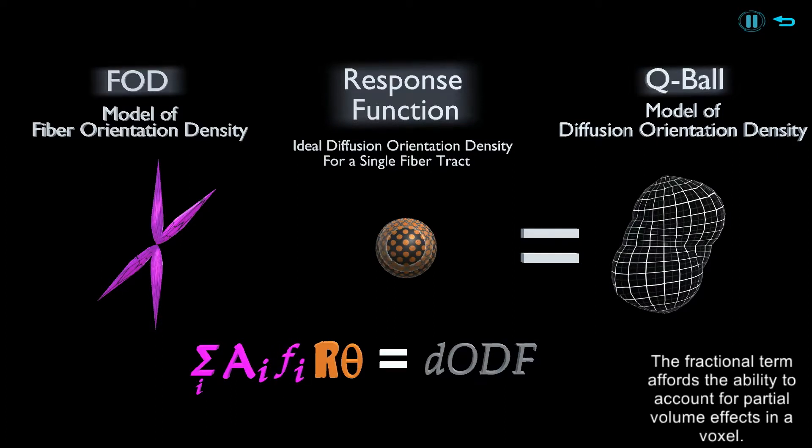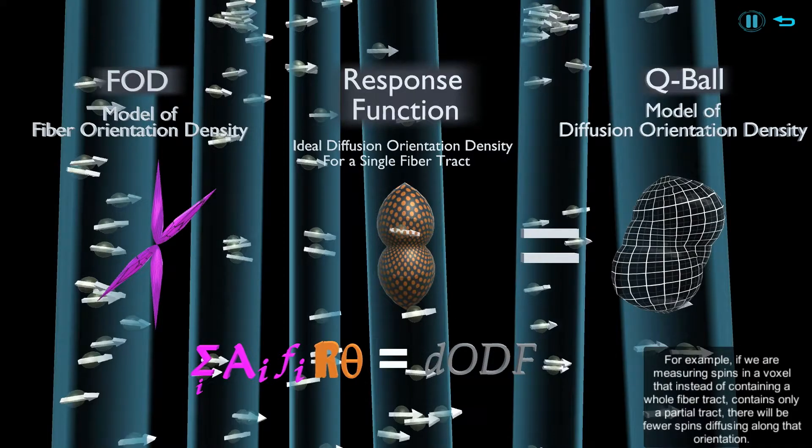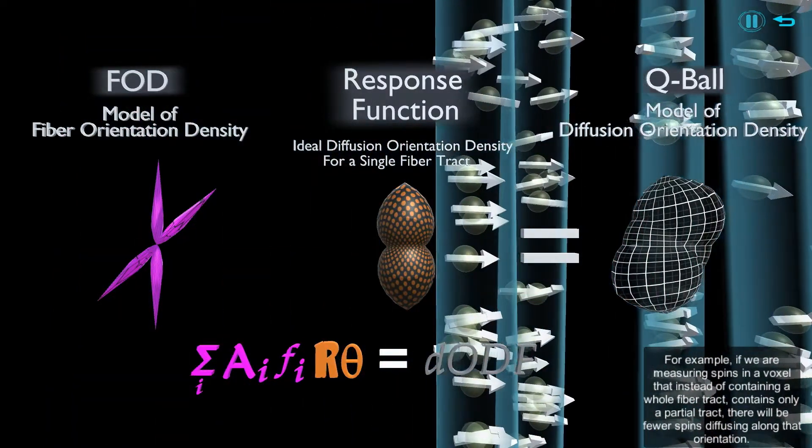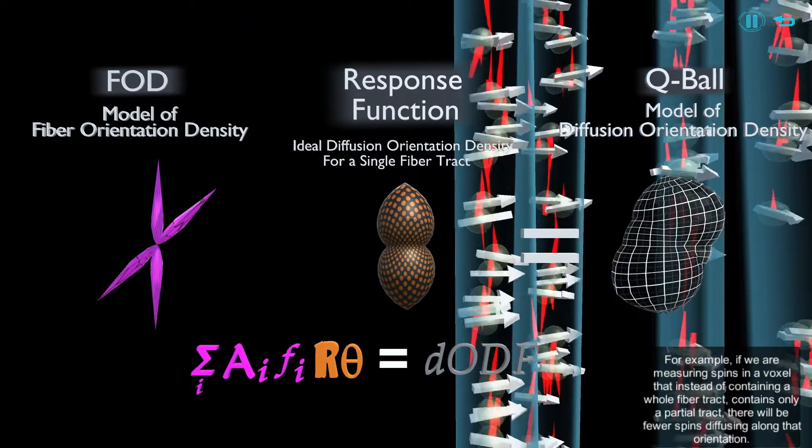For example, if we are measuring spins in a voxel that instead of containing a whole fiber tract, contains only a partial tract, there will be fewer spins diffusing along that orientation.